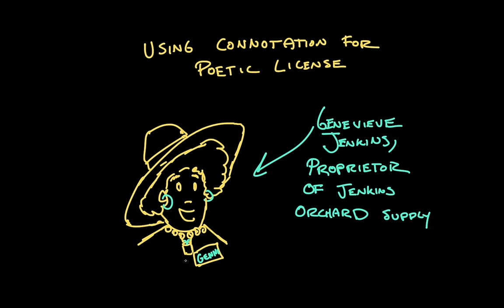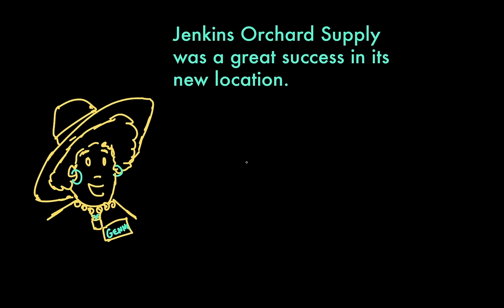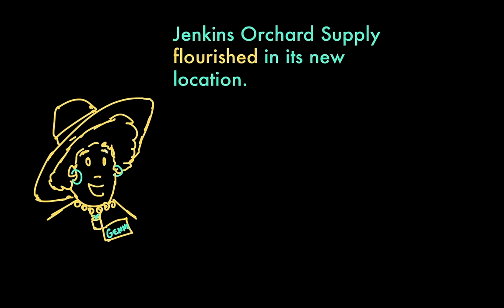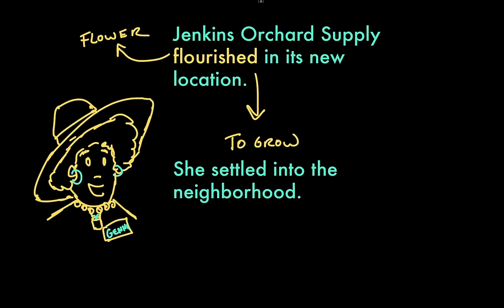I could say Jenkins Orchard Supply was a great success in its new location, but if I wanted to put in a little bit of that nature note, I'd say Jenkins Orchard Supply flourished in its new location, because flourished is related to the word flower. To flourish is to grow. Grow and flourish have a similar denotation, but different connotations — grow can refer to plants, but also to anything that increases in size. A little sponge toy can grow when you place it in a cup of water, but it won't flourish. Flourishing has a connotation of flowering and success. Continuing this idea, I could talk about how Ms. Jenkins decided to settle on the location of her plant nursery, and rather than say she settled into the neighborhood, I could say instead that she put down roots there.